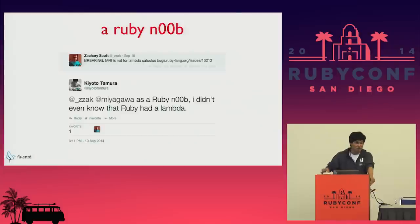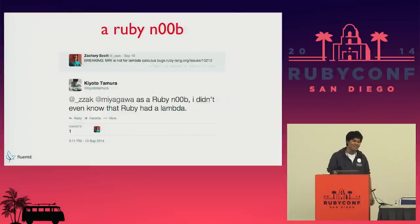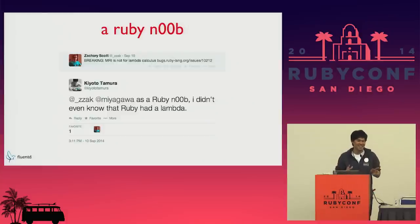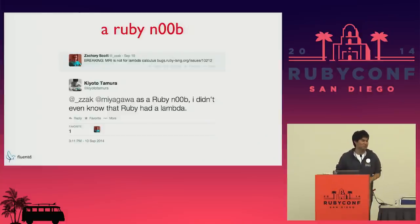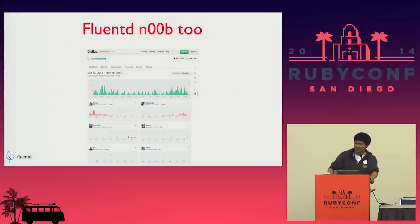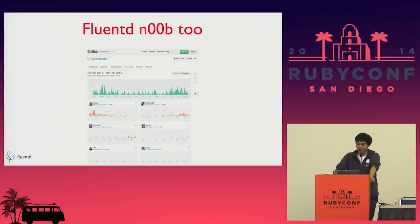First of all, I'm a Ruby noob. I didn't know that Ruby had Lambda. This morning, Mutt talked about static typing — I like that as an idea, but I think that would make Ruby a little too hard for me to program in. The other thing is I'm a Fluentd noob, too. That's the contributor graph and the top six people, and I'm at sixth.